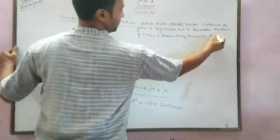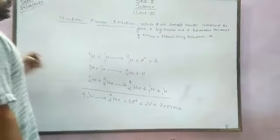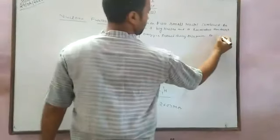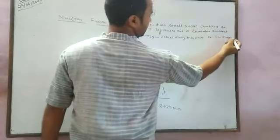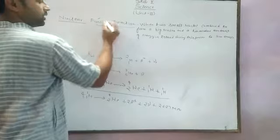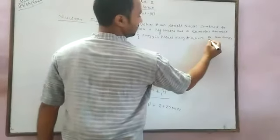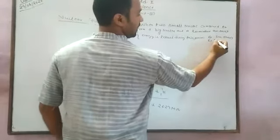Examples: inside the sun, solar energy is generated in the form of fusion reactions. Second example: hydrogen.